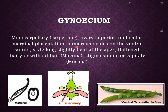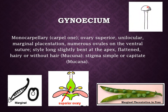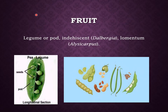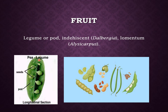The stigma is capitate or simple. This is the diagram of capitate stigma. The presence of a legume or pod-like fruit is the characteristic feature of family Papilionaceae. These are indehiscent fruits present in Dalbergia and lomentum in Elicicarpus. These are examples of legume fruit in pea plants — pod-like legume fruit.